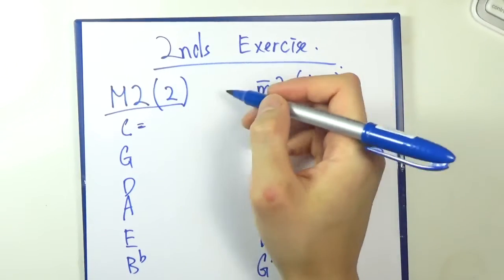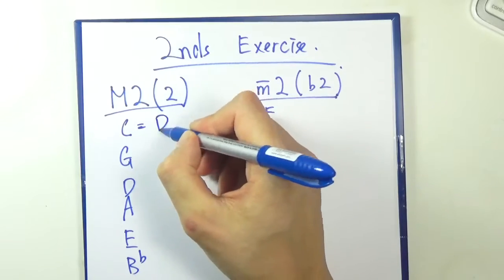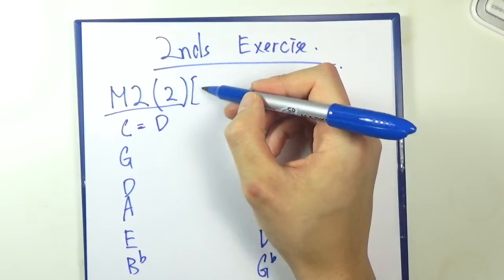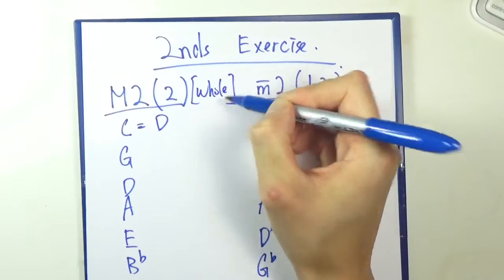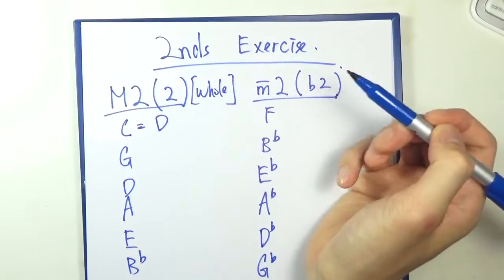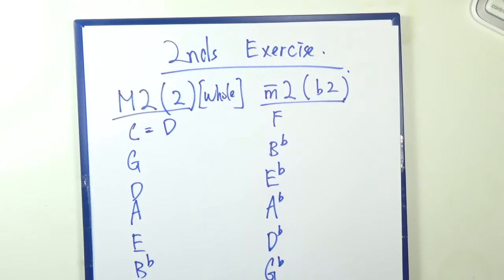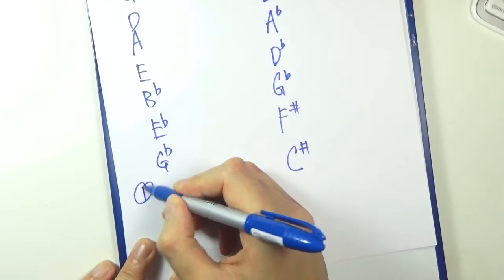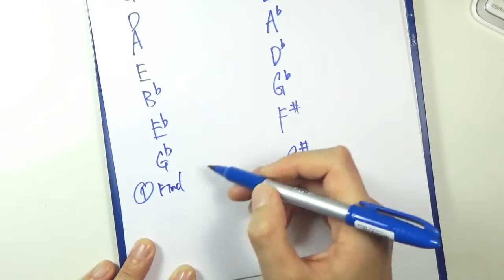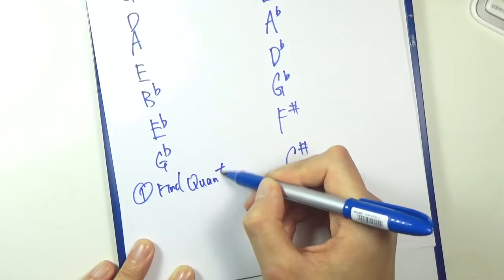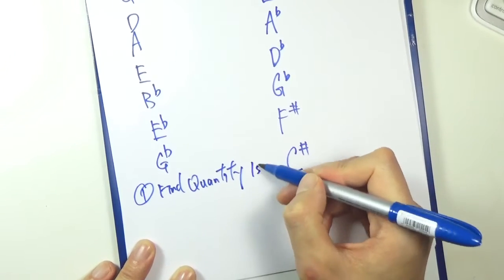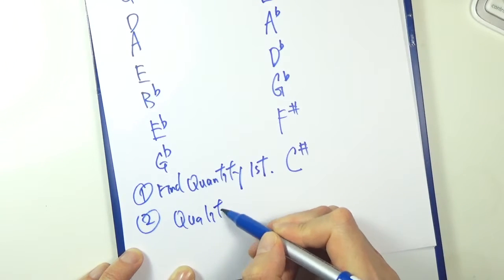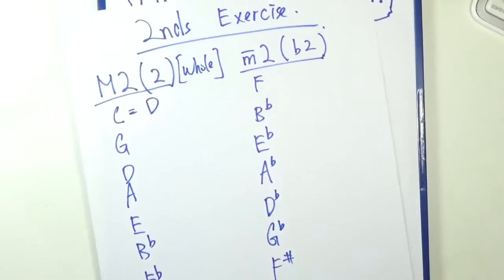The way you do it is you go for quantity first. So C and D, so that should be a D. And then you check whether it's a whole step apart. And positive. So that's your answer there. So let me quickly write down the procedure again. So find quantity first, and then you find your quality. That's your procedure there.